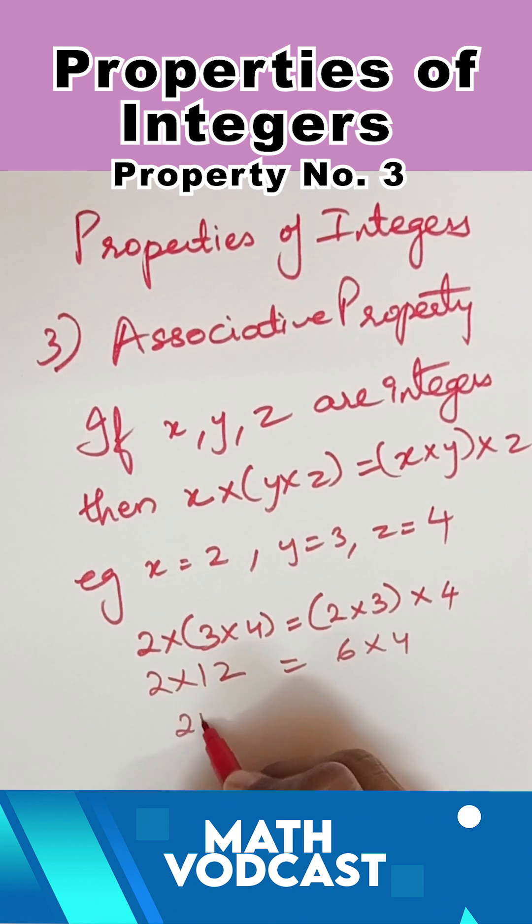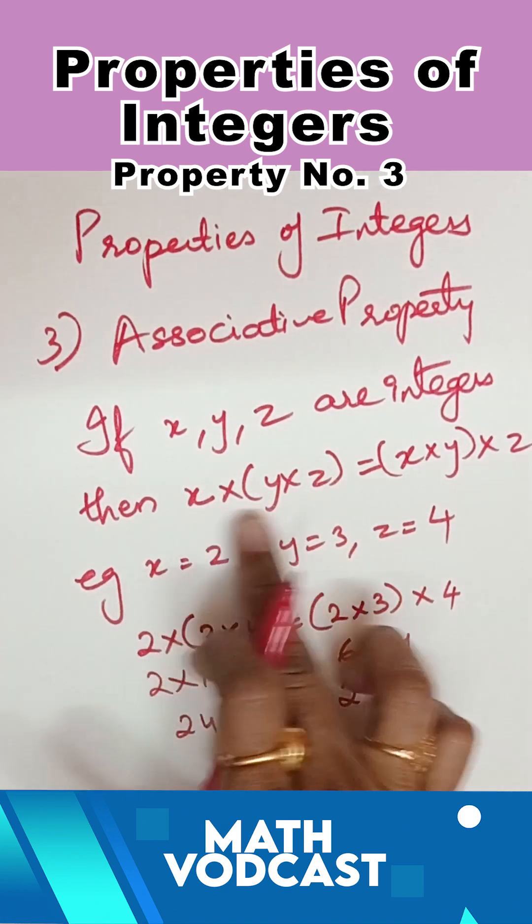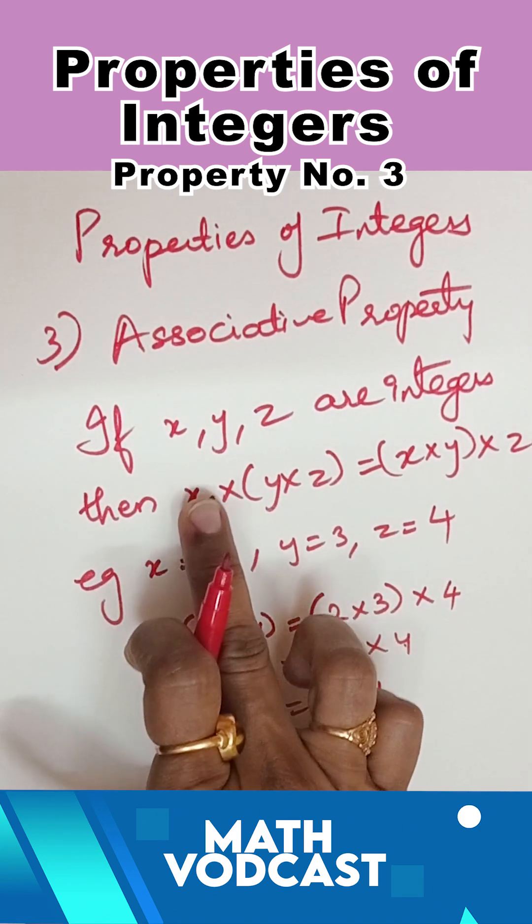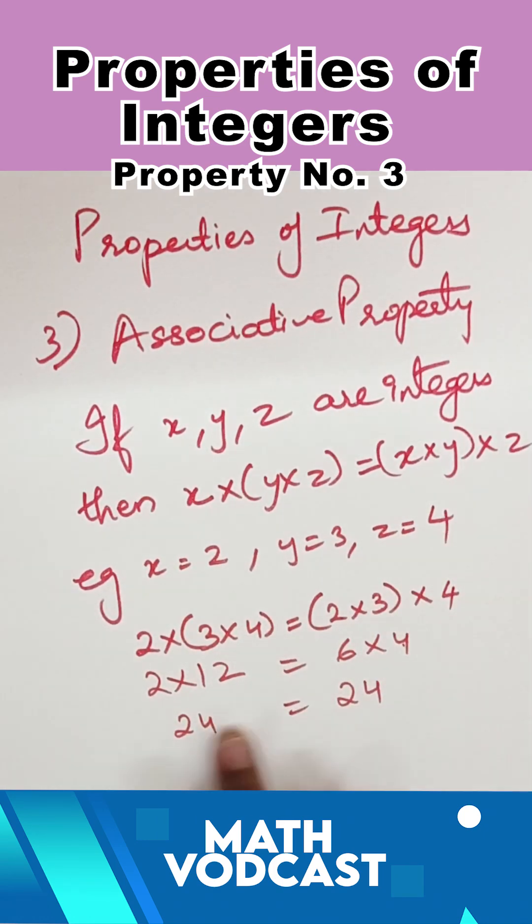2 times 12 is what? 24. And 6 into 4 is also 24. However you multiply, whether you are multiplying x into y into z or x into y into z, the answer will be the same.